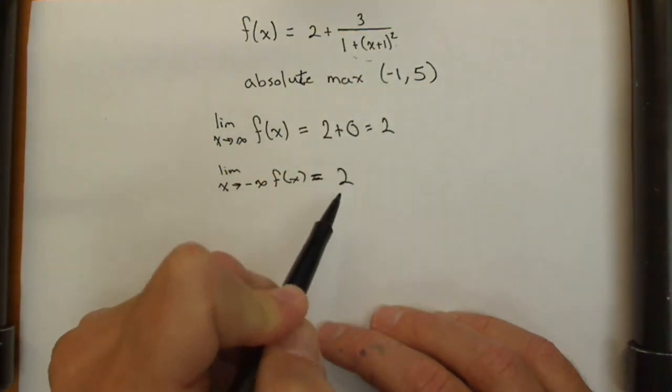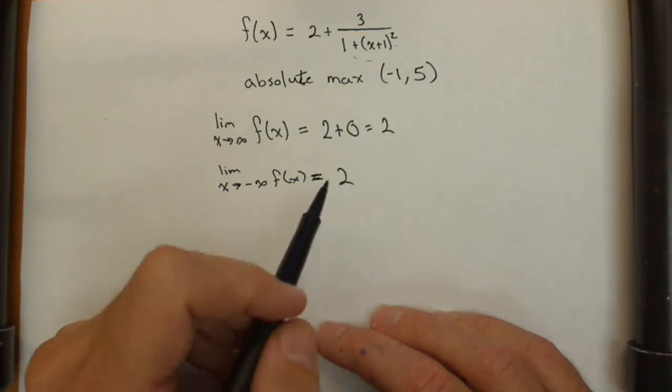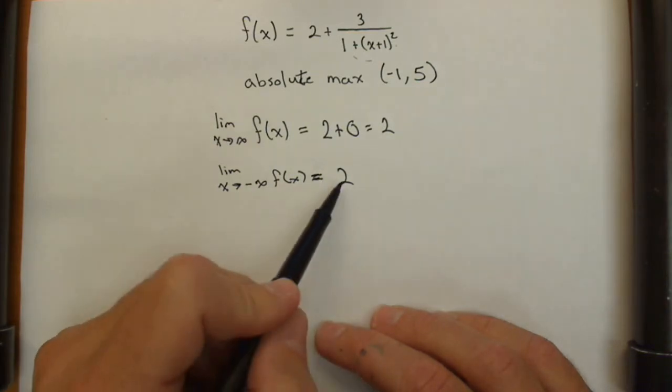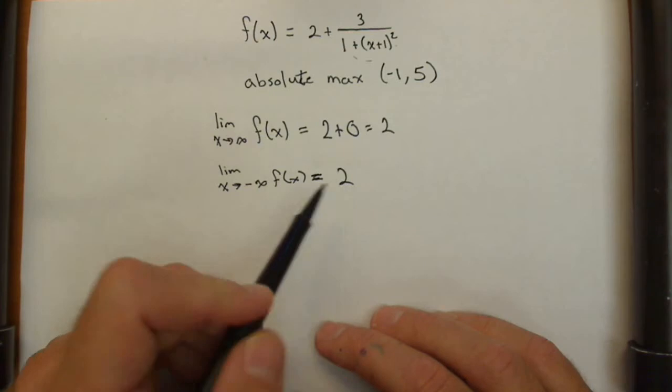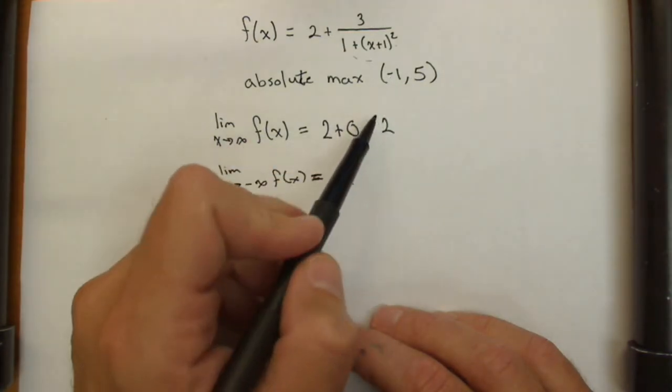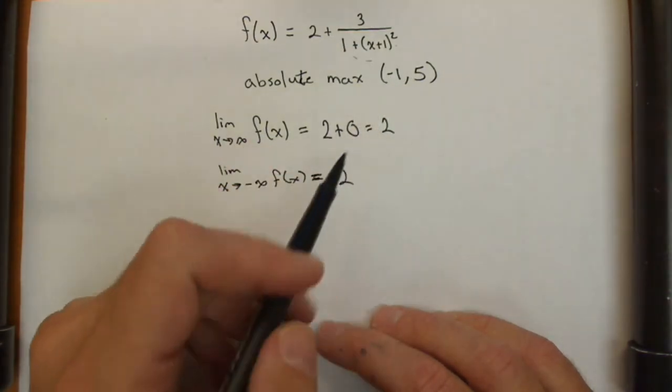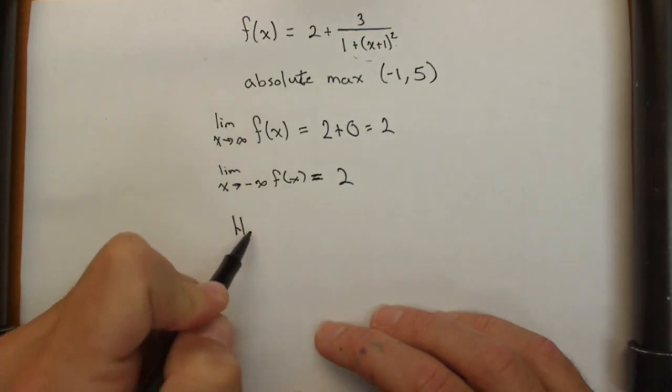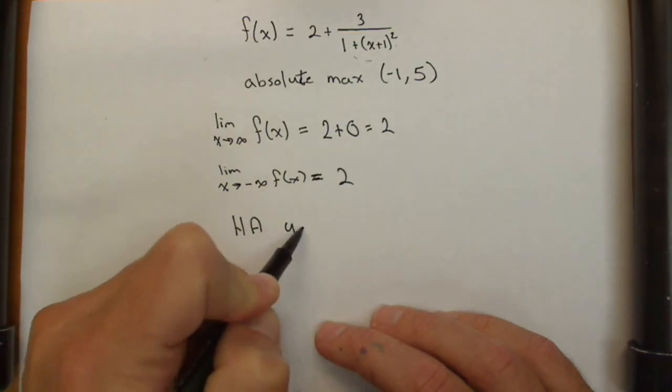So we have a function that is coming up from 2, increases to 5 at -1, and then decreases back to 2. So we have a horizontal asymptote at the line y = 2.